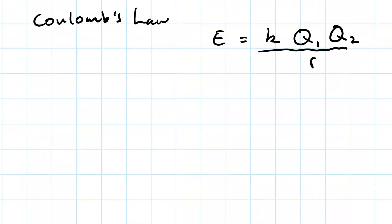Remember Coulomb's Law? Coulomb's Law tells you about the potential energy between two charged particles, particle one and particle two. K is a constant. Q1 is the charge on particle one. Q2 is the charge on particle two. And R is the distance between them.